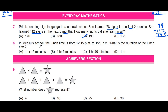Question eight: in Miku's school, lunchtime is from 12:15 pm to 1:20 pm. What is the duration? From 12:15 pm to 1:15 pm is exactly 1 hour. Then from 1:15 pm to 1:20 pm is 5 more minutes. So the total duration is 1 hour 5 minutes — option B. These are the kinds of everyday math problems we encounter in real life.